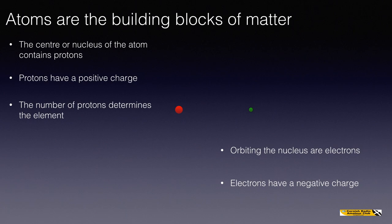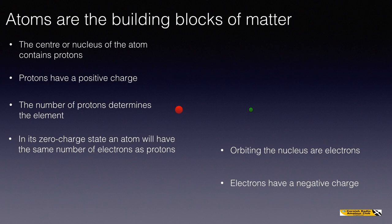And in an atom there are normally the same number of protons and electrons, particularly, or only actually, in its zero charge state. So in its zero charge state, an atom will have the same number of electrons as protons. So the charge of a proton is plus one, and the charge of an electron is minus one, and so the two cancel out.